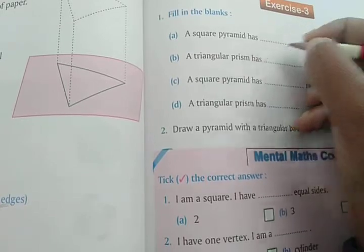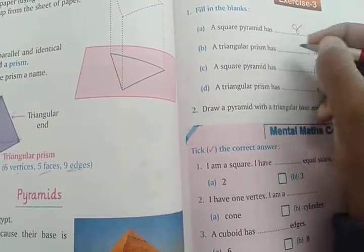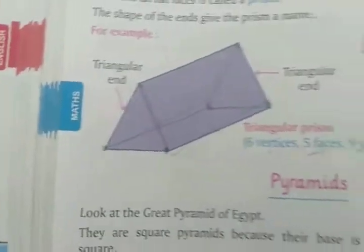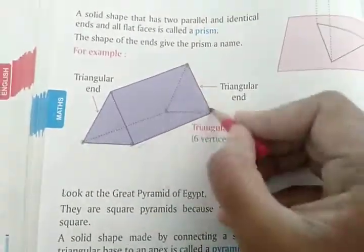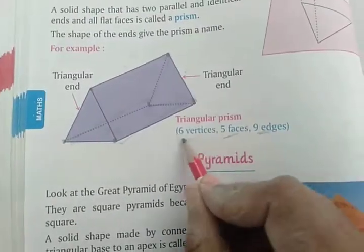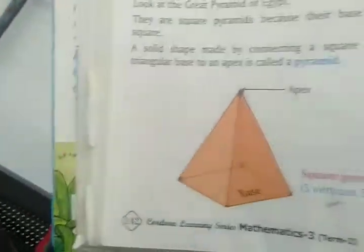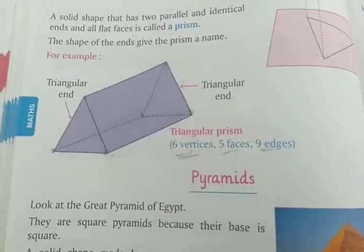Fill in the blanks — a square pyramid has 8 edges۔ A rectangular prism has 6 vertices۔ A square pyramid has 5 faces۔ A rectangular prism has 9 edges۔